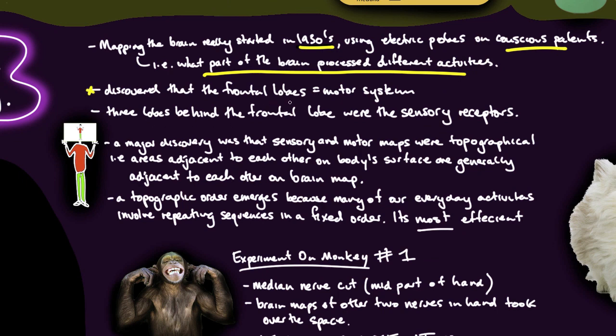Really what they're doing there is determining what part of the brain processes what activities. They discovered a number of things - that the frontal lobes are the motor system and that the three lobes behind the frontal lobe were the sensory receptors.